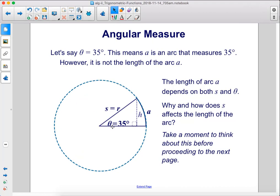Let's say theta equals 35 degrees. This means a is an arc that measures 35 degrees. However, it is not the length of the arc a.